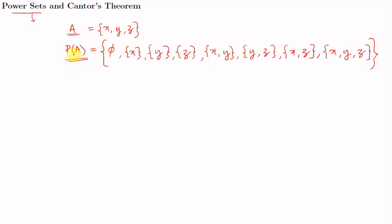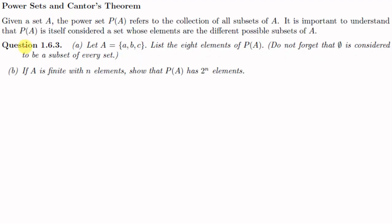Note that P(A) is a set and all the elements of P(A) are also sets. So P(A) itself is a set whose elements are sets. We have a question: given A equal to {a, b, c}, list the eight elements of P(A). Do not forget that phi is considered to be a subset of every set. Part B: if A is finite with n elements, show that P(A) has 2^n elements.